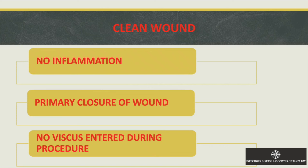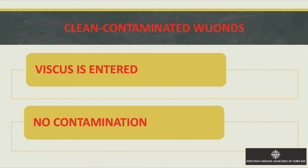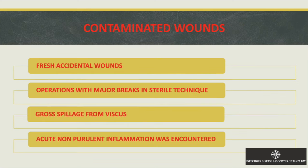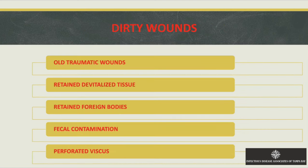A clean wound has no inflammation, primary closure, and no entrance into the viscous. Clean-contaminated means they entered a viscous but there's no contamination at the incision site. Contaminated wounds involve major breaks in sterile technique, spillage from the viscous, or non-purulent inflammation. Dirty wounds have retained foreign bodies, fecal contamination from peritonitis, or perforated viscous.